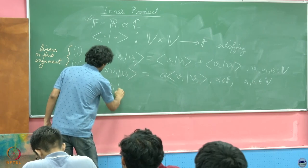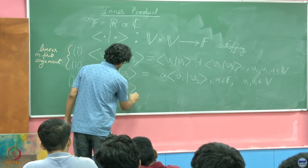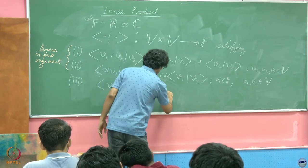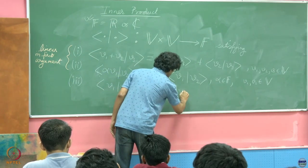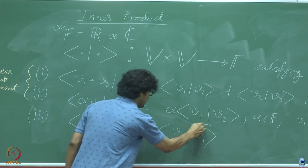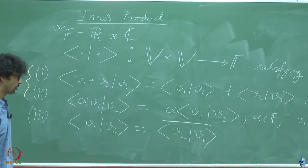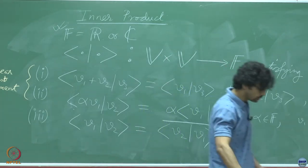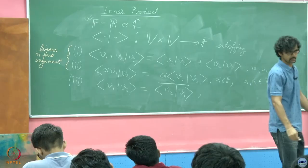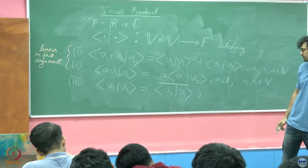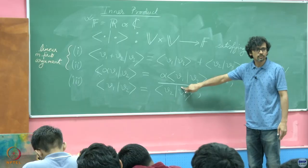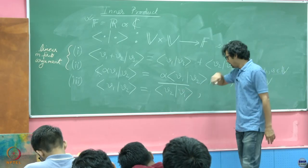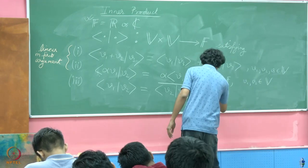Property three: the inner product of V1 and V2 is given by the complex conjugate of the inner product of V2 and V1. If you are dealing with the real field, conjugation has no effect. But if you are dealing with the complex field, you flip the sign of the imaginary part.